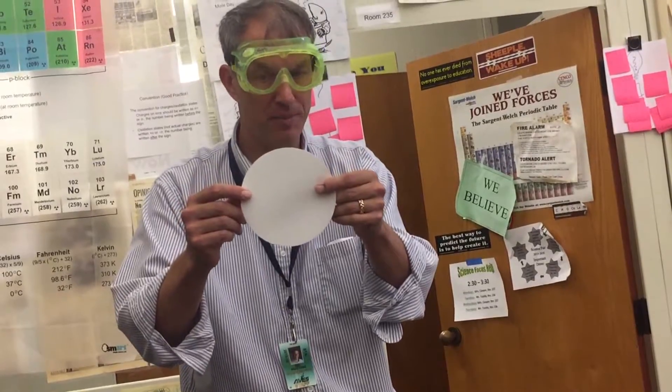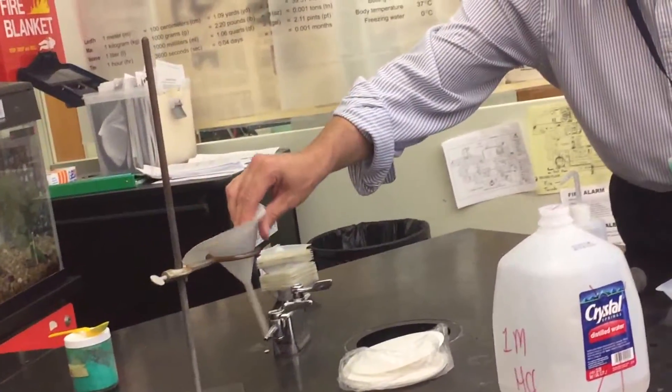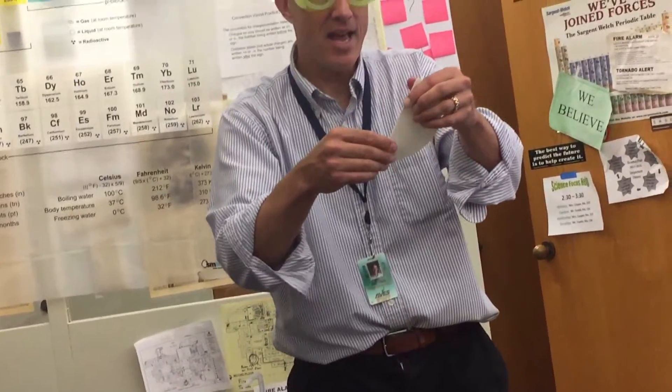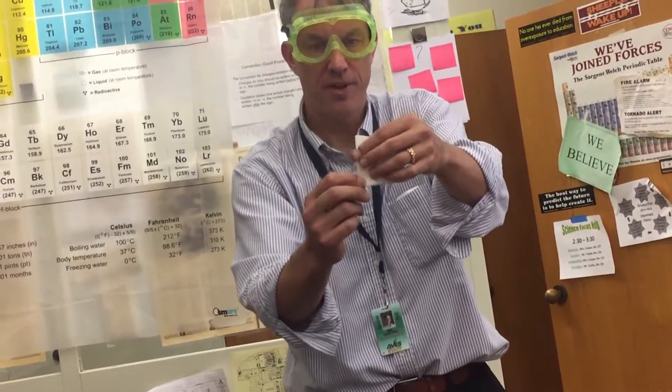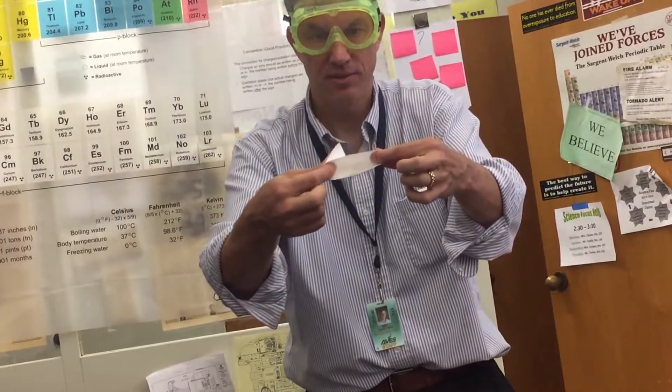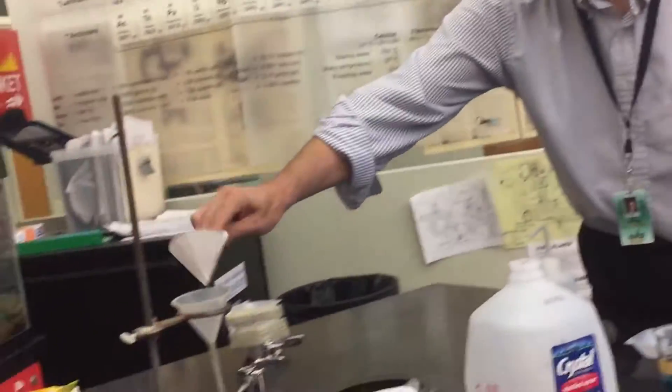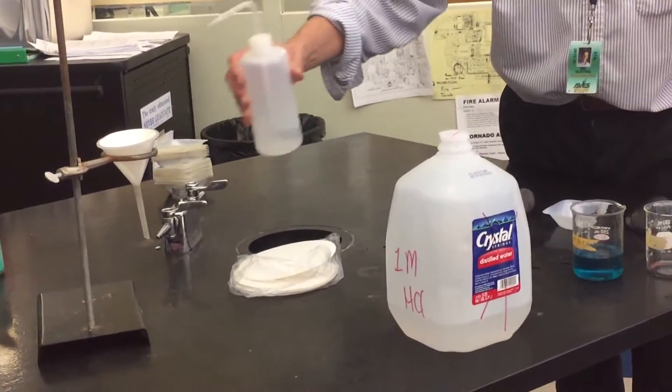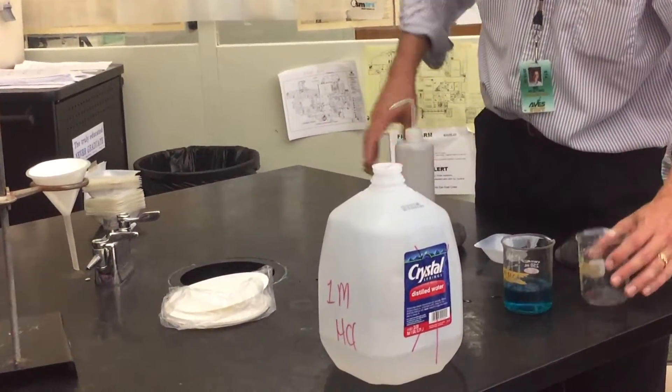Now, watch how we use the filter paper. If I put it in here like this, it's not going to work. Okay, so fold it in half. Okay, we fold it in half again. We get a quarter of a cone. Okay, we take this and you see a nice dome right there. That sticks in there. Give it a little bit of water so it sticks in there.